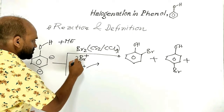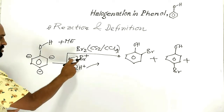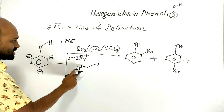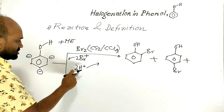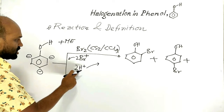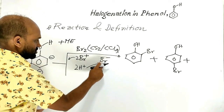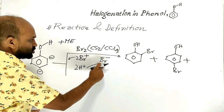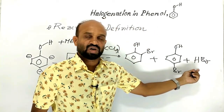The bromine cation combines with the benzene ring, and from the benzene ring, hydrogen atoms go out as protons. So, it is a kind of electrophilic substitution reaction. These two protons combine with bromide ions produced from the bromine molecule. The proton and bromide ion form hydrogen bromide, which is a by-product in the reaction.